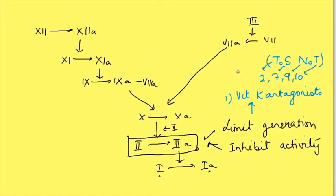Factor 10 activity is also inhibited by giving heparin. If factor 10 is inhibited, there will be no formation of thrombin. Heparin actually binds with antithrombin 3 and inhibits factors 9, 10, 11, and 12.